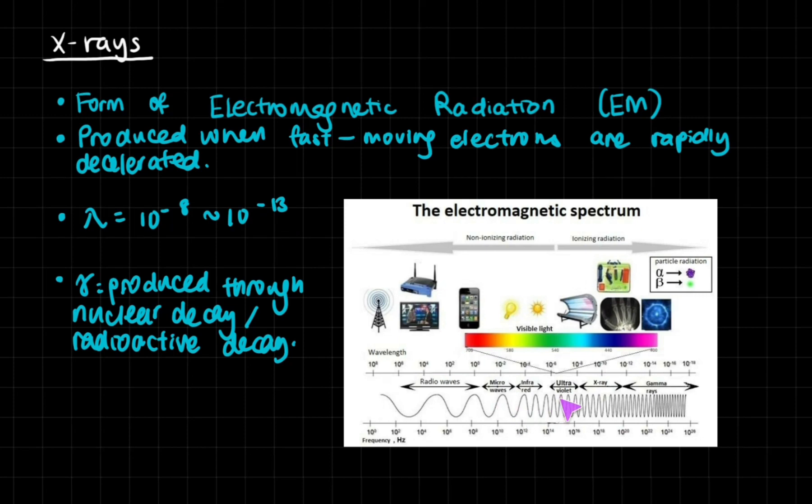So if you look at this here, they have a higher frequency and a higher energy than our visible light, but they have slightly less than the gamma rays.